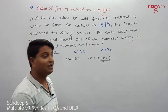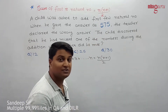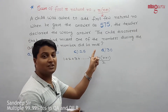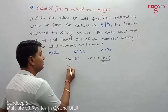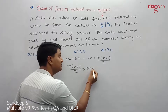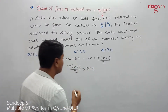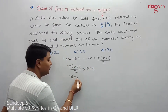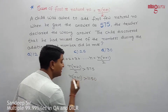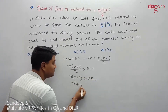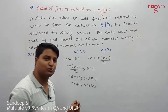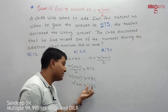n(n+1)/2 should be greater than 575. So n(n+1) should be greater than 1150. We can say n² + n should be greater than 1150. So we need to think about the value of n whose square is close to 1150.